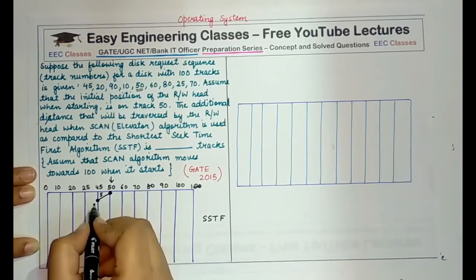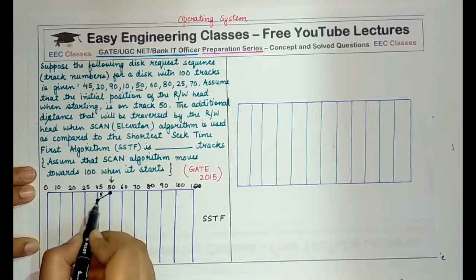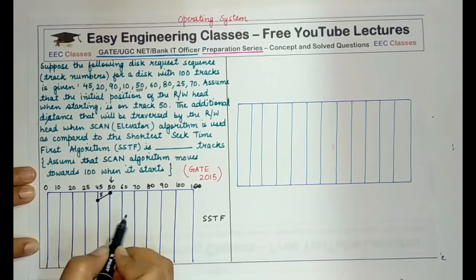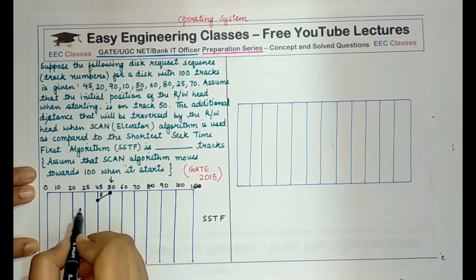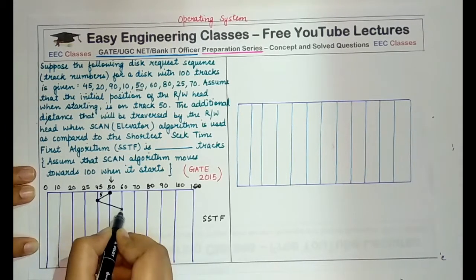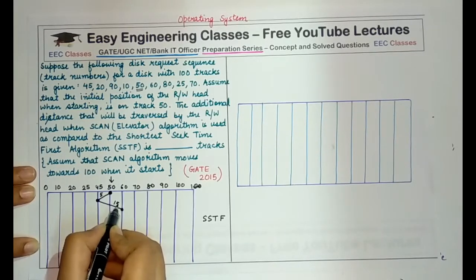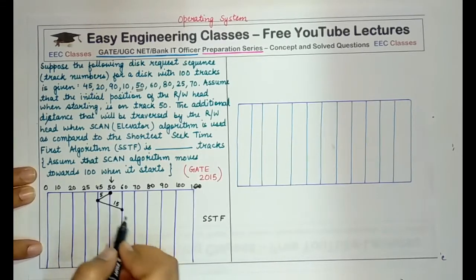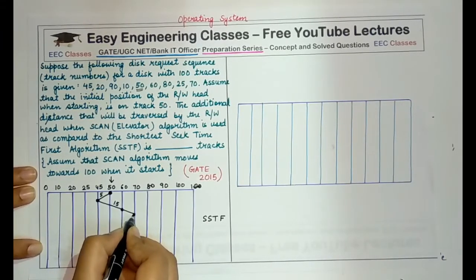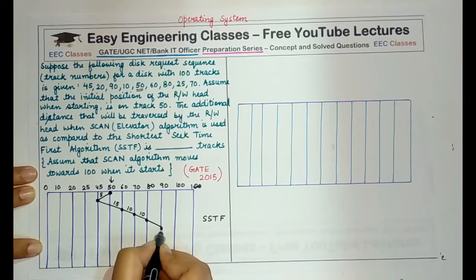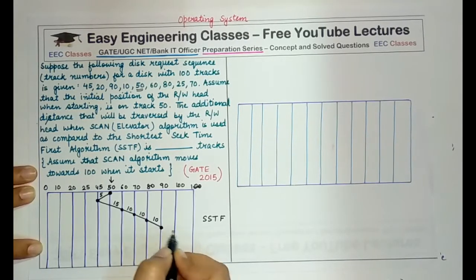Now from 45, the least request will be from 45 to 60, which requires a seek time of 15 units instead of from 45 to 25, which requires 20 units. So from 45, we move to 60 and service this request, which uses 15 units of time. Then from 60, definitely the nearest one is 70 that makes use of 10 units. Then 80, again 10 units, then 90.